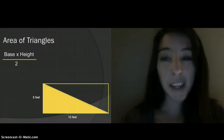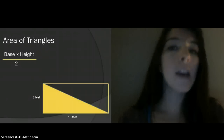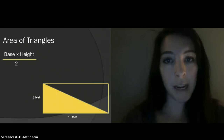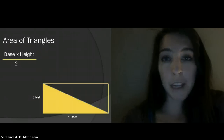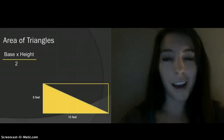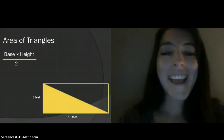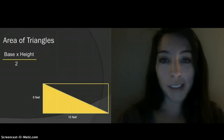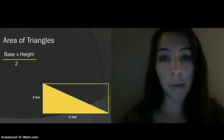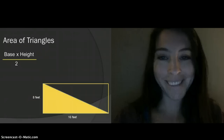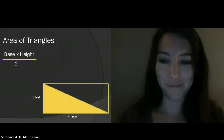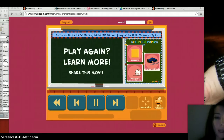All right, so if you feel like you kind of understand area and perimeter, at least the general basics of it right now, you can go ahead and stop this video and you're done with your homework after you answer those four questions. If you want a little bit more, keep watching and I'm going to show you a couple BrainPop videos. I'll see you guys in class tomorrow. And by the way, the password for tomorrow's lesson to get into class is going to be toenails.